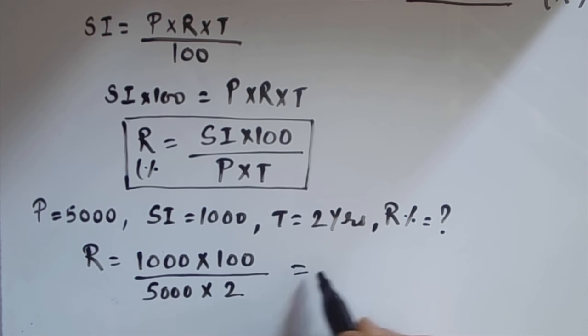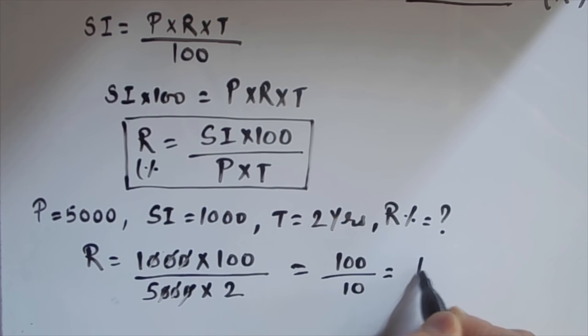We just need to solve this. So this will be, these three zeros, this will be 100 over 5 times 2 is 10, which will give us 10. So our rate of interest for a principal amount of 5000 for two years is 10 percent.